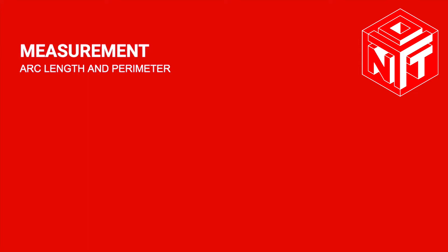Arc length and perimeter. We already know the perimeter is the distance around the shape. An arc length is just part of a circle's circumference, or just the curve length of a sector.